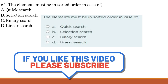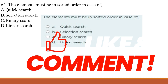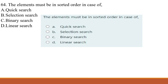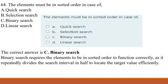Question 64: Elements must be in sorted order in case of which search? A) quick search, B) selection search, C) binary search, D) linear search. The correct answer is C, binary search. Binary search requires the elements to be in sorted order to function correctly, as it repeatedly divides the search interval in half to locate the target value efficiently.